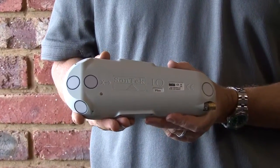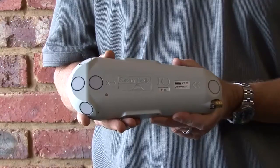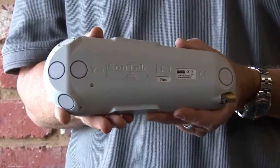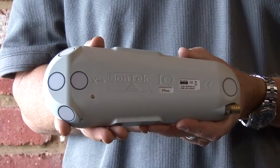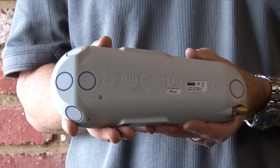There's actually two models. The Sontek IQ standard has an operating range of 8 centimeters or 3 inches up to 1.5 meters or about 5 feet.